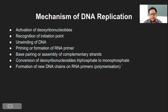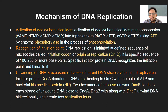Yesterday we had looked at these different steps which are involved in the mechanism of DNA replication. The first one was activation of the deoxyribonucleotides. In this specific case, there were monophosphates of the deoxyribonucleotides getting converted into triphosphate with the help of enzyme phosphorylase, which conducts the process of phosphorylation. And this was obviously with the help of ATP.